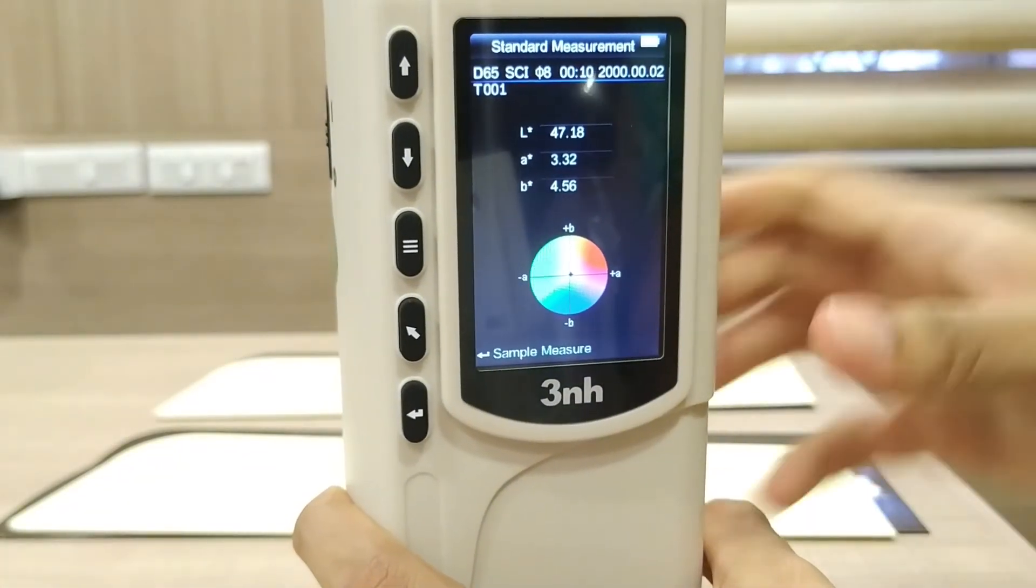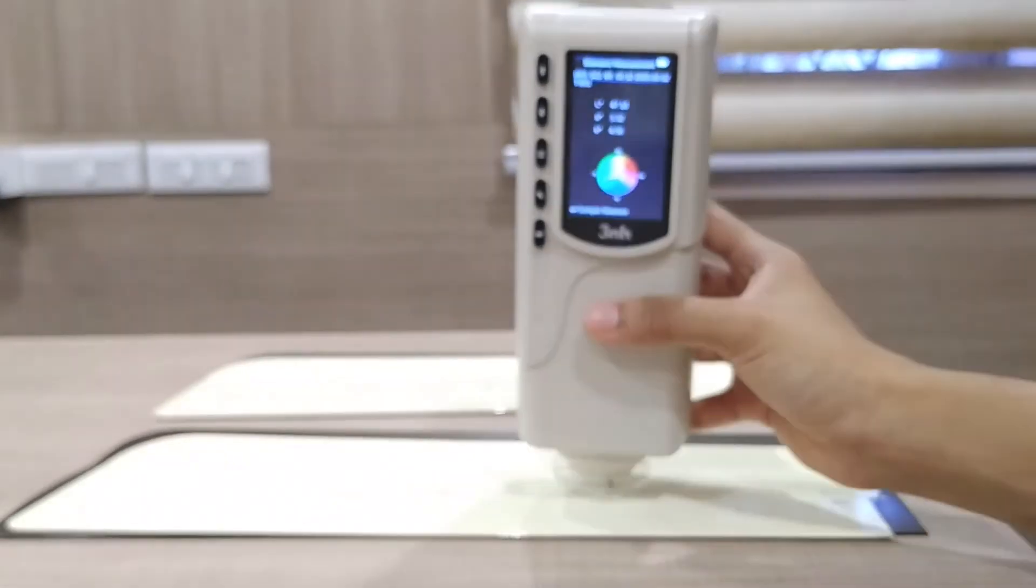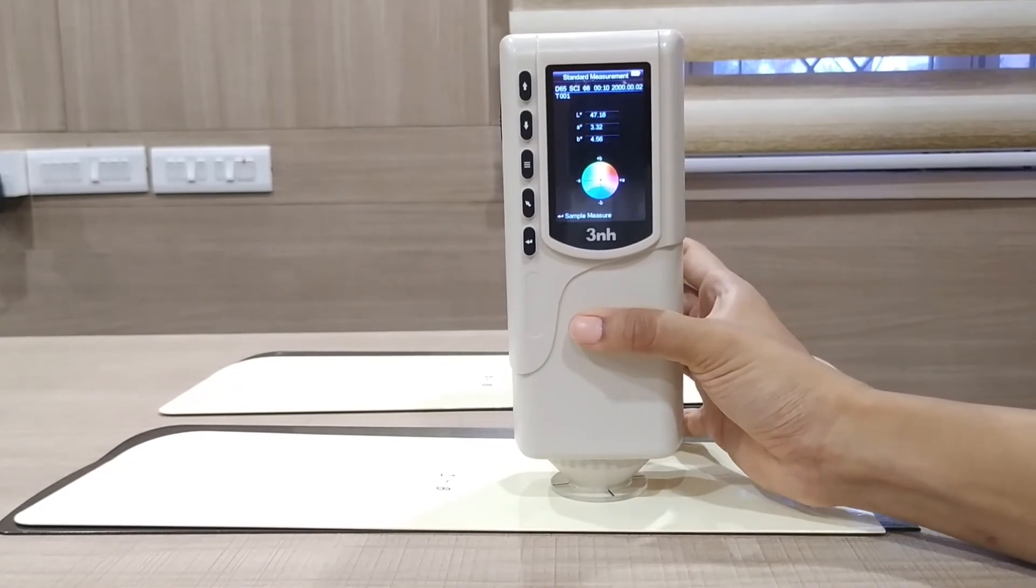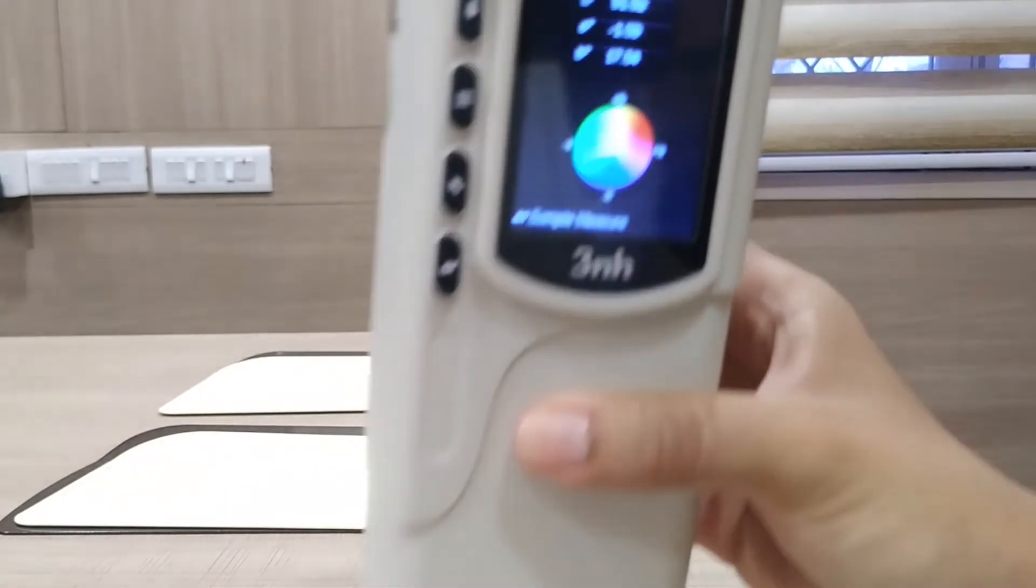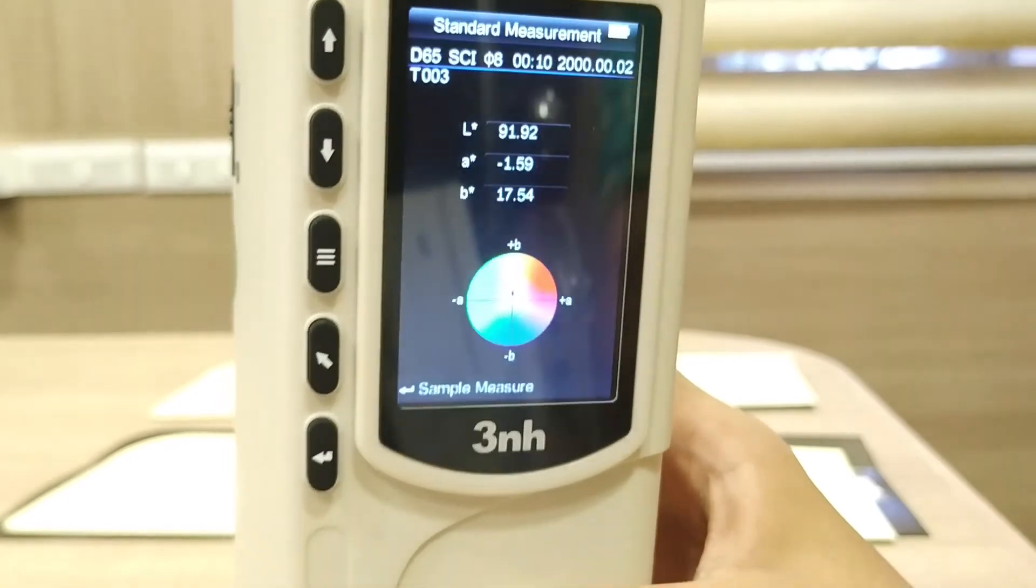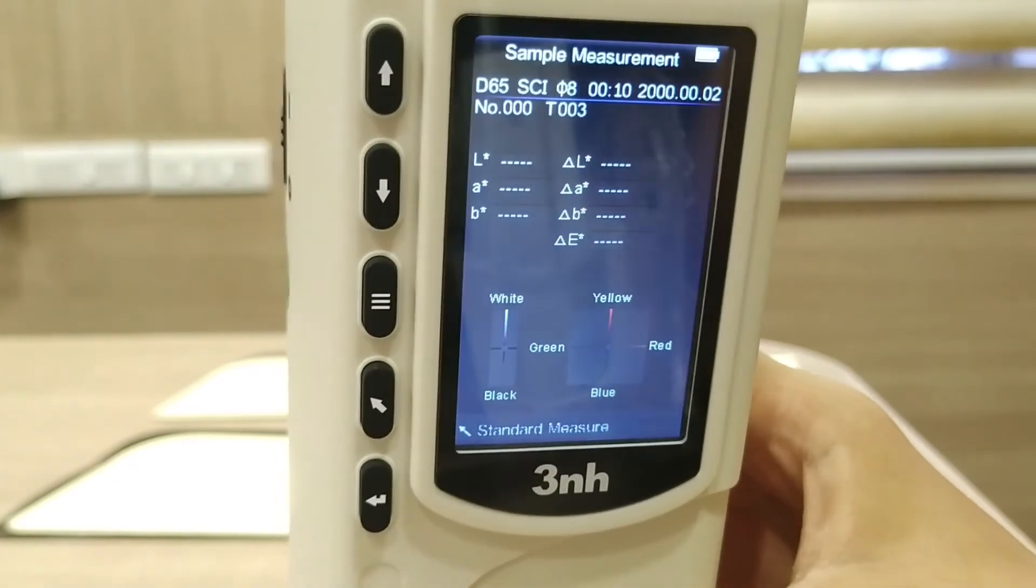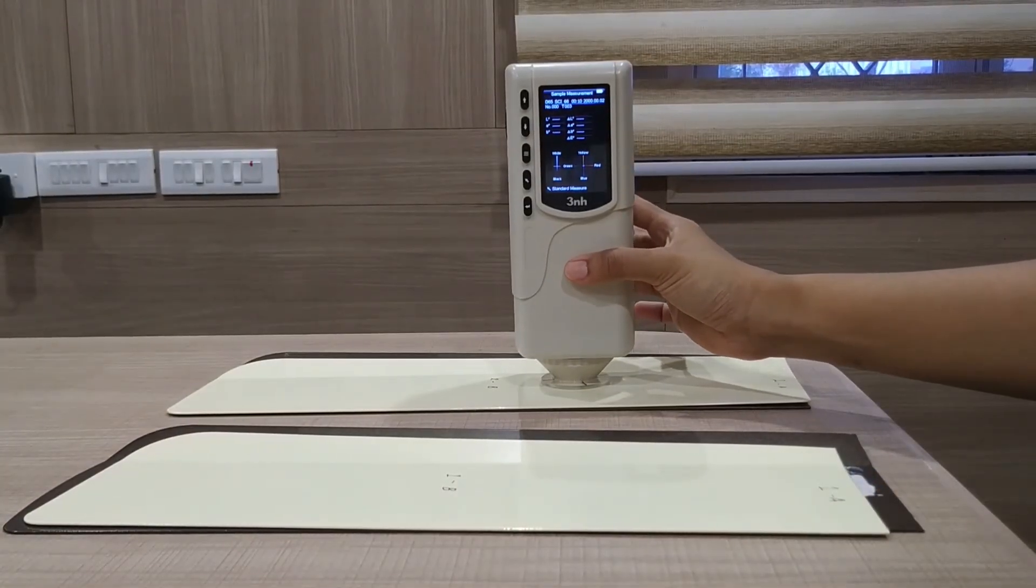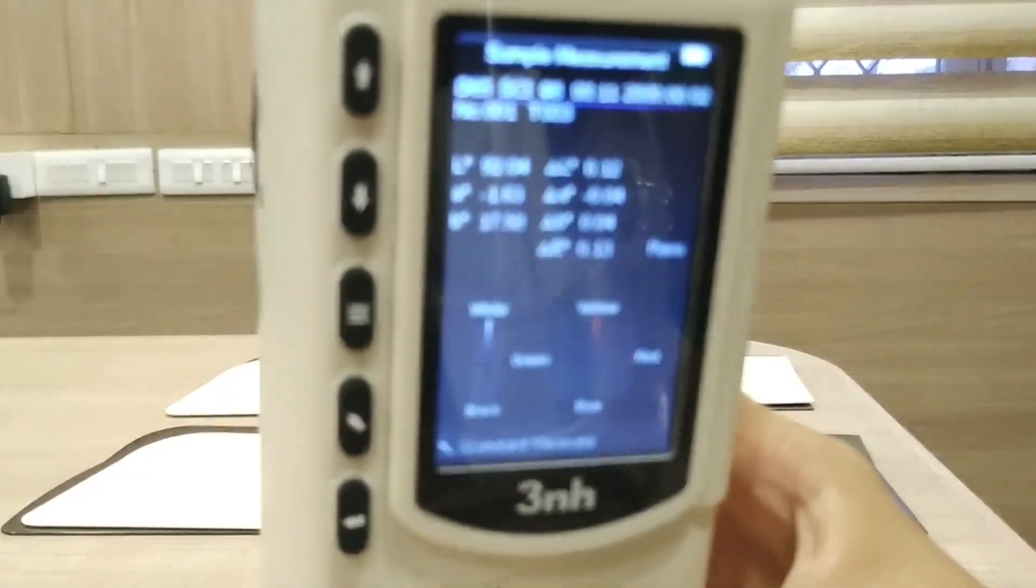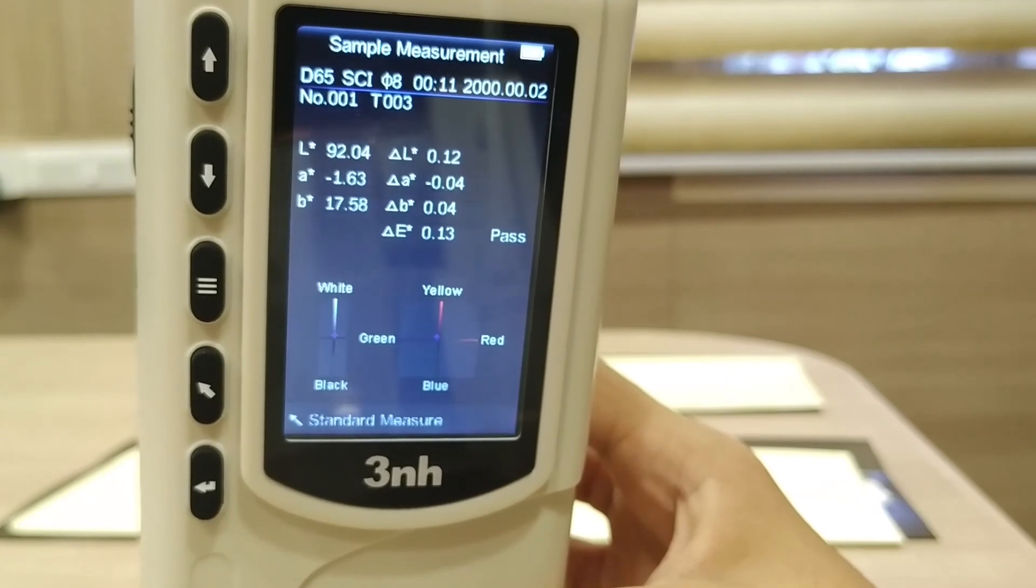Going back to the standard measurement mode. Here I have the standard and the sample, and I will measure the standard. Here is my standard values. And for this standard I will click on this button to measure my sample. Here you can see that the delta E value is less than 0.5, which means that my sample has passed the color test.